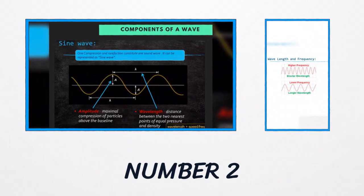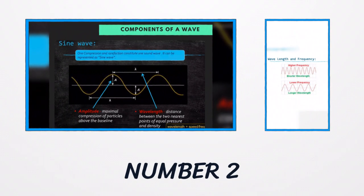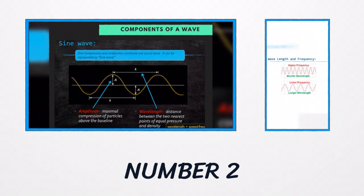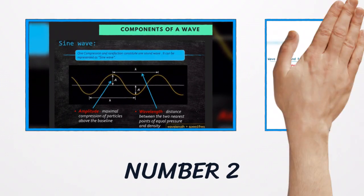And this with components, which has two components: amplitude and the wavelength. Amplitude does mean the maximum compression of particles above the baseline. And the wavelength is the distance between the two nearest points of equal pressure and density. And also, amplitude defines the brightness of imaging.